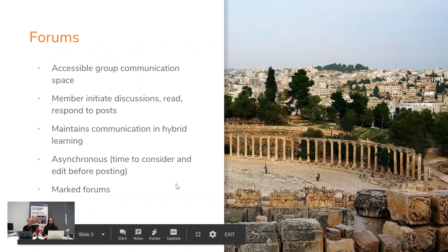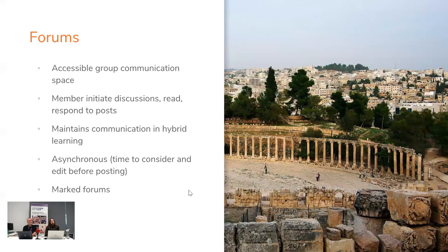The first thing we're going to talk about is online forums, which are things that have been around for a long time. As you can see in the picture in the presentation, this is a forum from somewhere in Jordan during the Roman era. Originally the word meant a kind of marketplace, then it became a place where people would gather to share ideas. One of the really big advantages of online forums is that they're asynchronous, so you don't always have to be online at the same time as with a webinar.